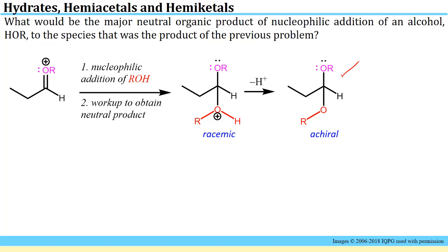That would lead to this species, which is now achiral because we have OR, OR, two of the same groups on the carbon here. It had been racemic here when this was different from this, but in the end we get an achiral product.